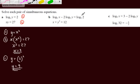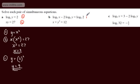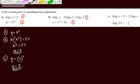Let's look at the next one. We will call this equation 1 and this one equation 2. We've got log to the base 5 of x minus 2 log to the base 5 of y is equal to log to the base 5 of 2, and equation 2 is x plus y squared is equal to 12.